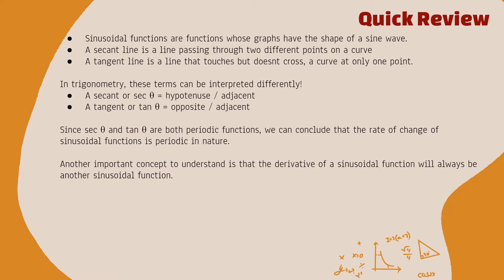Since secant theta and tan theta are both periodic functions, we can conclude that the rate of change of sinusoidal functions will also be periodic in nature. Since we're talking about hypotenuse over adjacent, no matter where you go over your sine graph you'll always be repeating the same hypotenuse and adjacent side — it's just a never-ending repetition of a certain segment of the graph. So if the secant (average rate of change) and the tangent (instantaneous rate of change) are both periodic, then all rates of change of sinusoidal functions will be periodic.